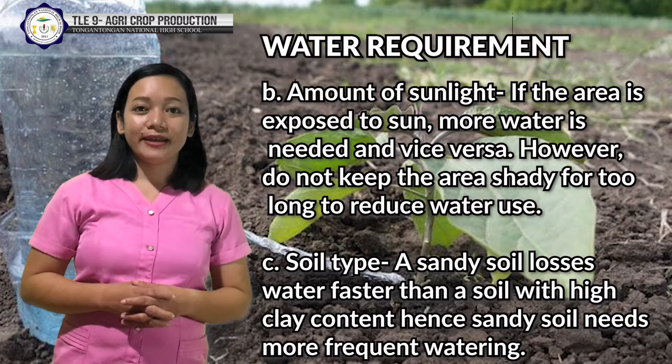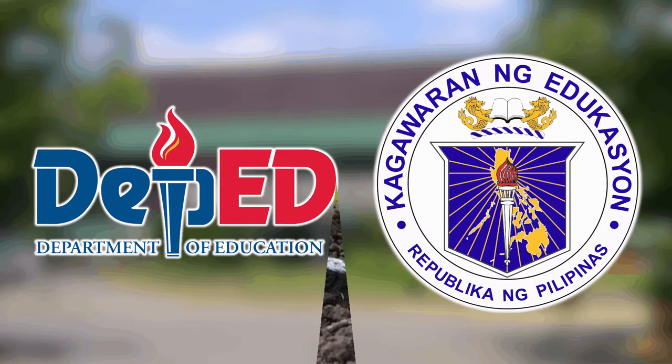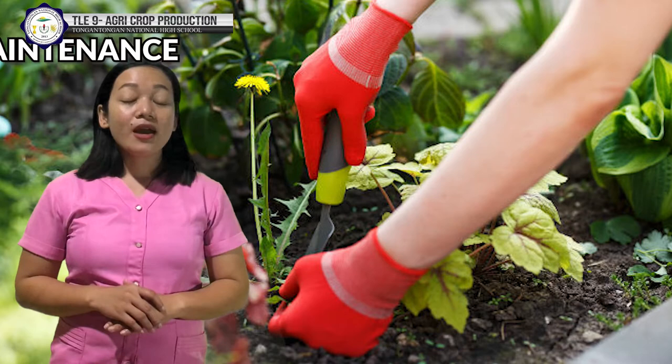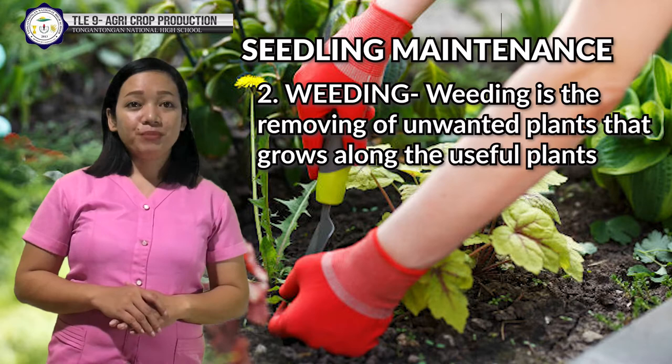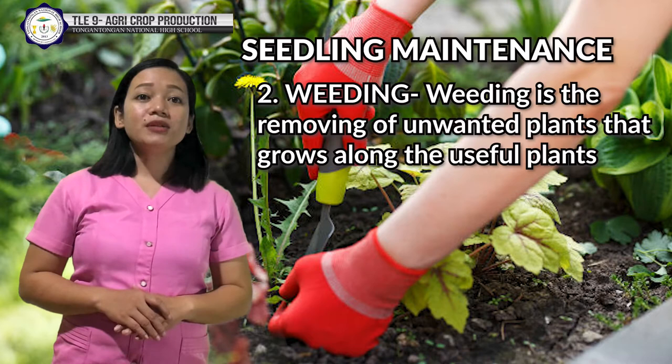Another way of seedling management is weeding. Weeds are a threat to healthy seedling development. They compete with seedlings for nutrients, water, and light. Hence, they must be eradicated or controlled. With your hands or a tool, gently pull out any unwanted growth.